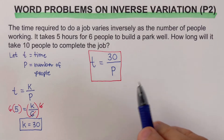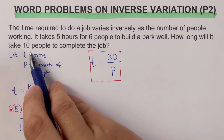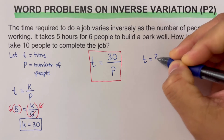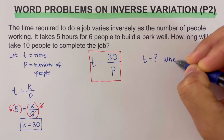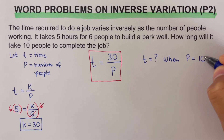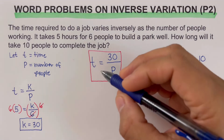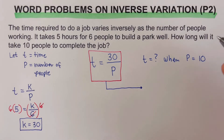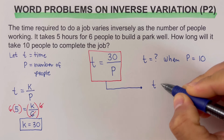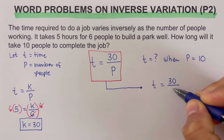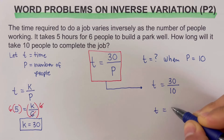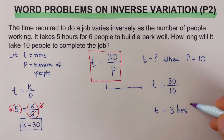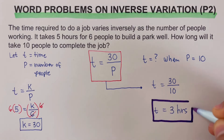Since we need to determine the time it takes for 10 people to complete the job, t is unknown when the number of people is 10. We use the same equation and put 10 in for p: t equals 30 over 10, which gives us t equals 3. So it takes three hours to complete the same job if there were 10 people working.